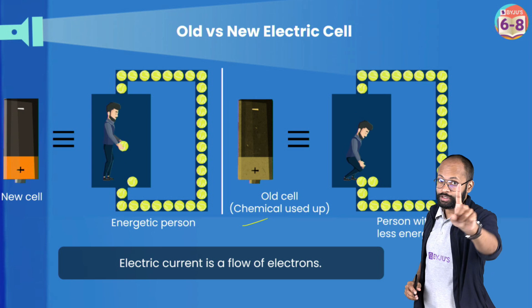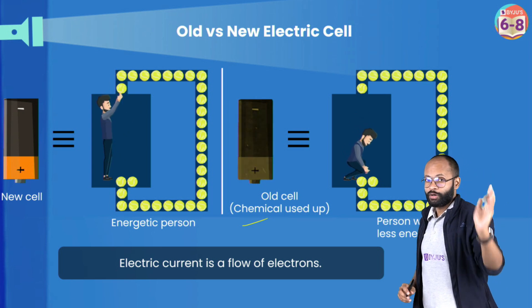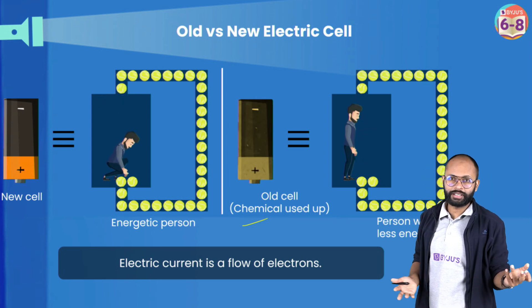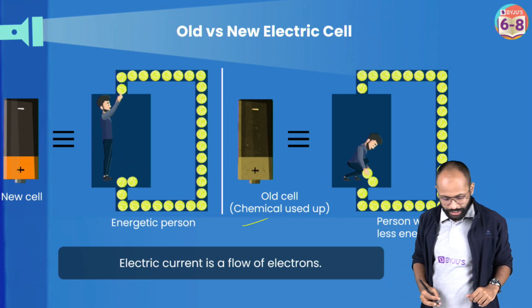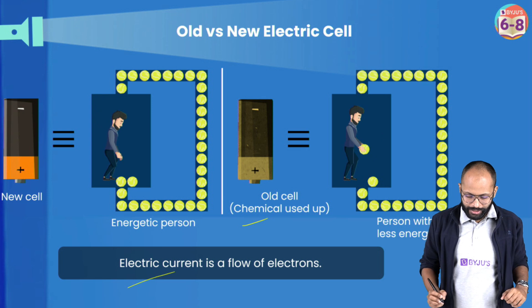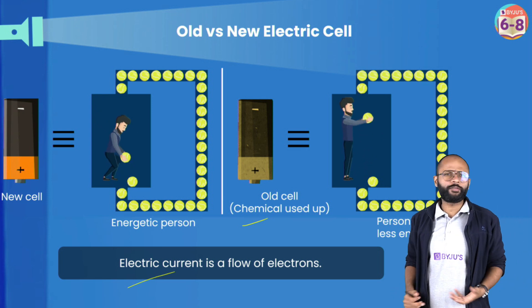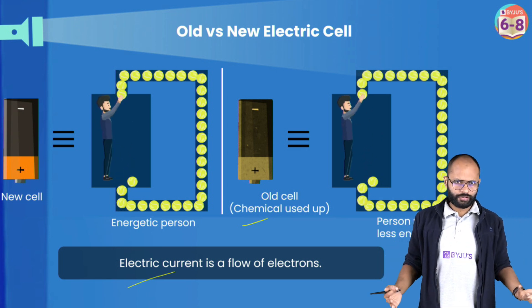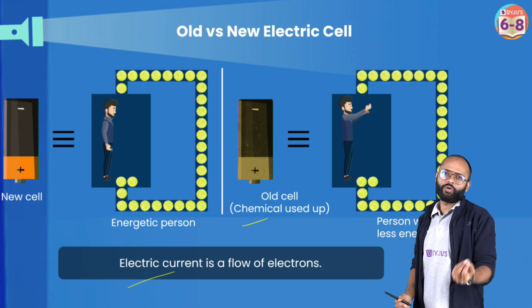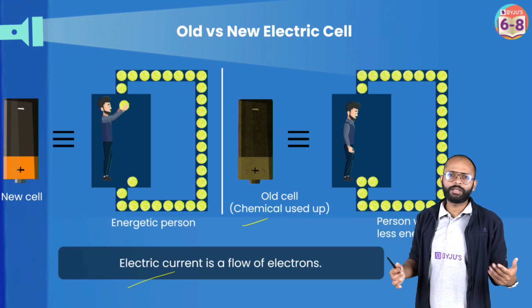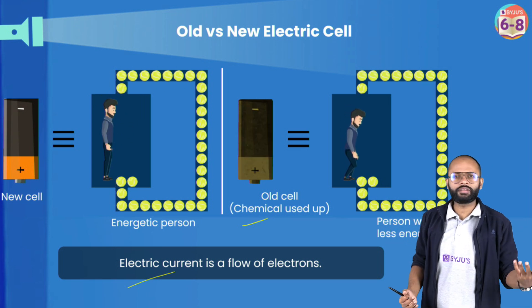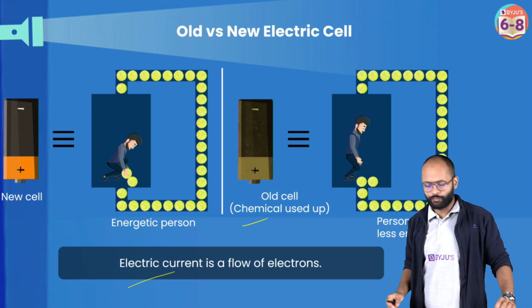It provides energy, not charge — a lot of people think that the electric cell provides charge, but no, it provides energy. Electric current is the flow of charges, or you can say it's the flow of electrons. Electrons flow — that is the reason electric current also flows.